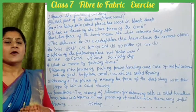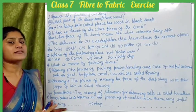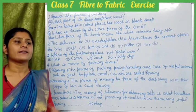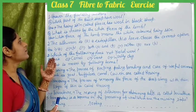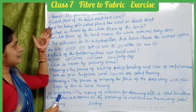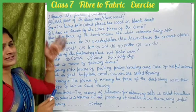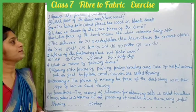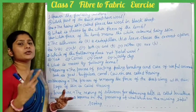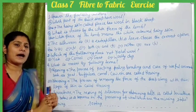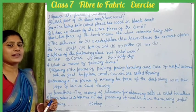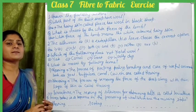In the previous class we completed Chapter 3 'Fiber to Fabric,' and right now in this video we have three exercises. The first question is based on two poems — 'Baa Baa Black Sheep, Have You Any Wool?' and 'Mary Had a Little Lamb.'